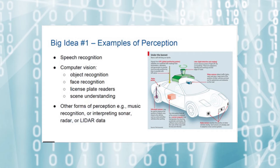Computer vision is another example of perception. Computer vision takes many forms. For example, face recognition allows computers to detect faces in images and even recognize specific people. Some phones now allow you to use your face to unlock the phone. Another type of computer vision is object recognition. This allows a self-driving car to recognize other vehicles, pedestrians, and traffic signs.